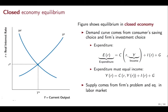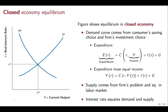The supply curve comes from the firm's problem. That's going to give you the demand for labor and the equilibrium in the labor market, which is how we construct this supply curve. The interest rate in the market is there to equate the value demanded and supplied in this economy. This is going to be the key difference when we move to open economies — the interest rate is not going to be the one that necessarily clears the domestic market.